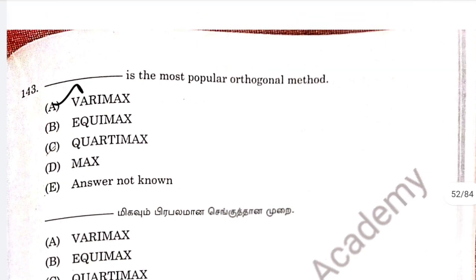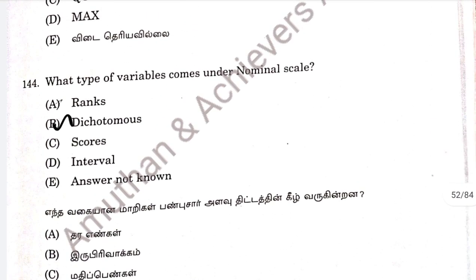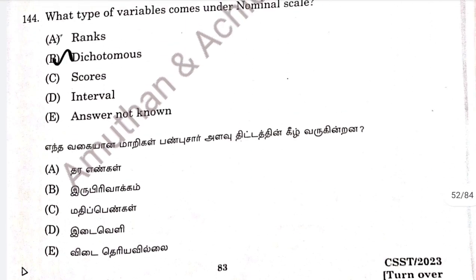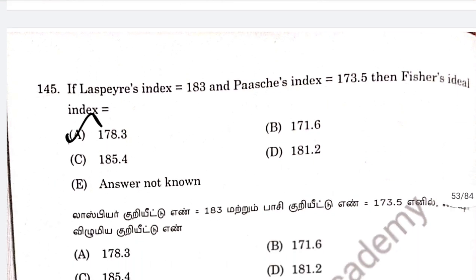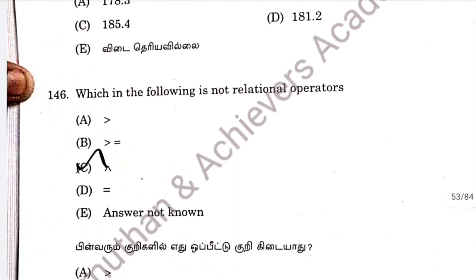Question 143: the most popular algorithm is Vogel's approximation method (VAM). Option E. Question 144: what type of variables come under the nominal scale? Type of religion. Option B is correct. Question 145: the Laspeyres base index — the necessary price index number — option E, 178 to the power 3. Question 146: which of the following is not a relational operator? Option C.